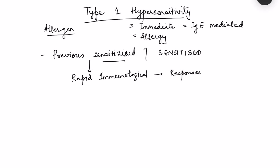Basically, the immune system is doing its job normally, however the responses become too much exaggerated. This happens when there is exposure to an antigen which the person is susceptible to, and this susceptibility is determined genetically. So it's not that the allergen acts as an allergen to all people — allergy is seen in some individuals and not in others.